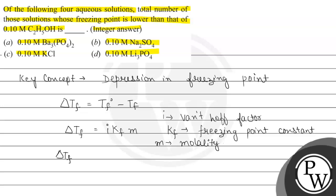The higher the van't Hoff factor, the more the freezing point of the solution will be lowered, because delta Tf represents the depression in the freezing point.